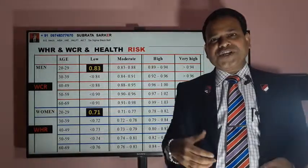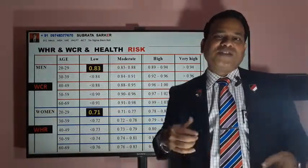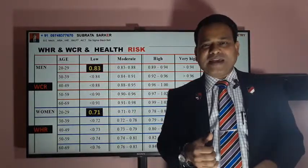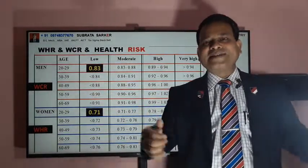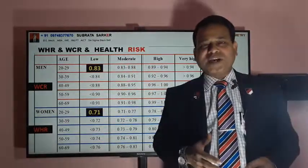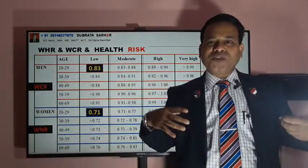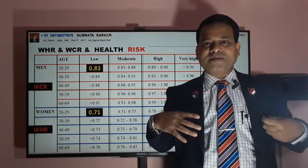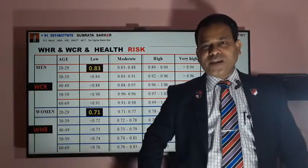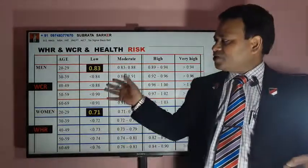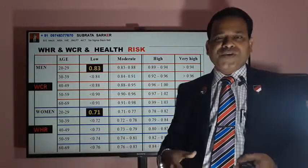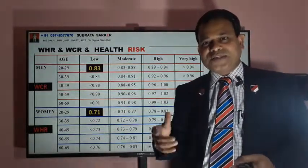There is a waist to chest ratio standard: for male it should be around 0.85, and for female around 0.7. This comes into body proportion — the proportion of different parts of the body like your chest, your waist, your hip. There is a standard chart for both WHR and WCR, for both male and female, and the chart is different for each.